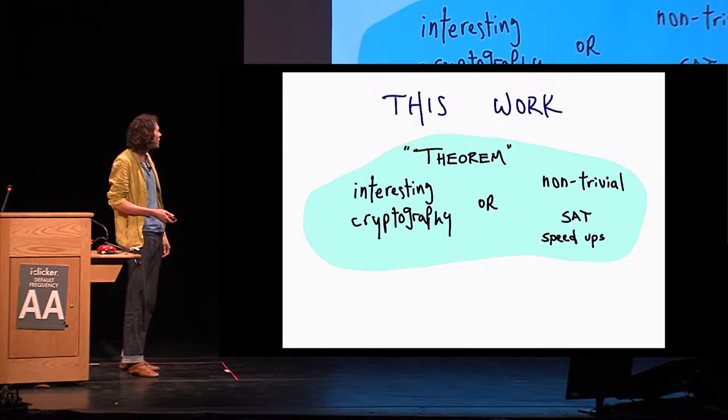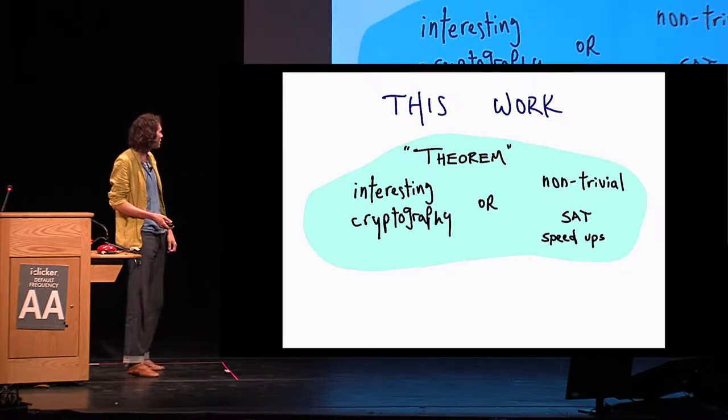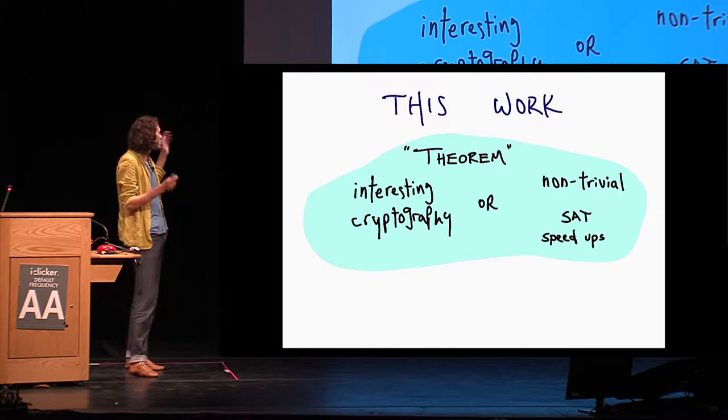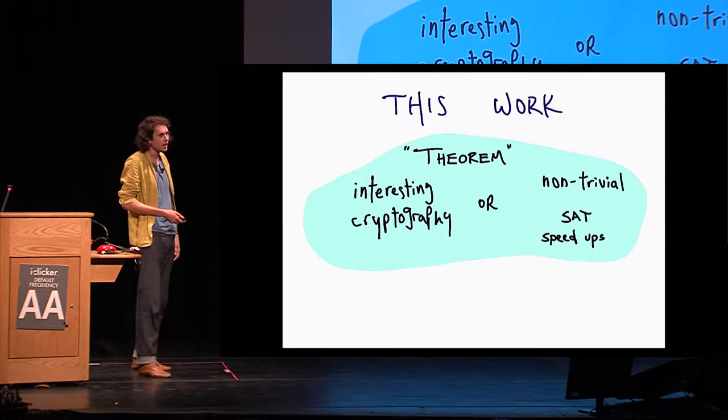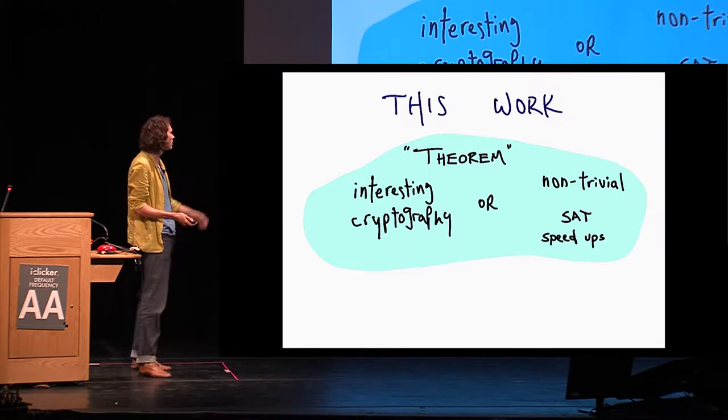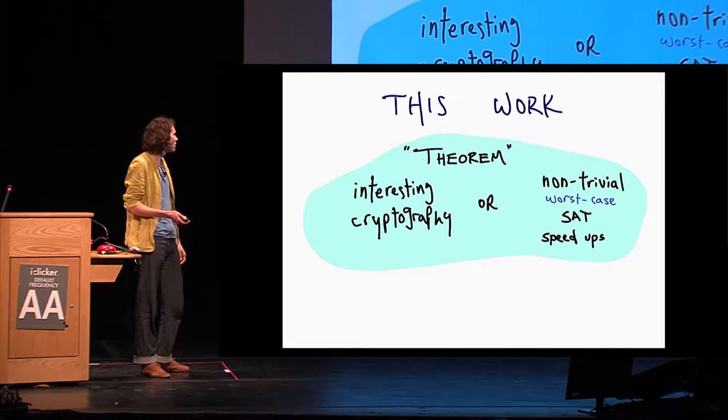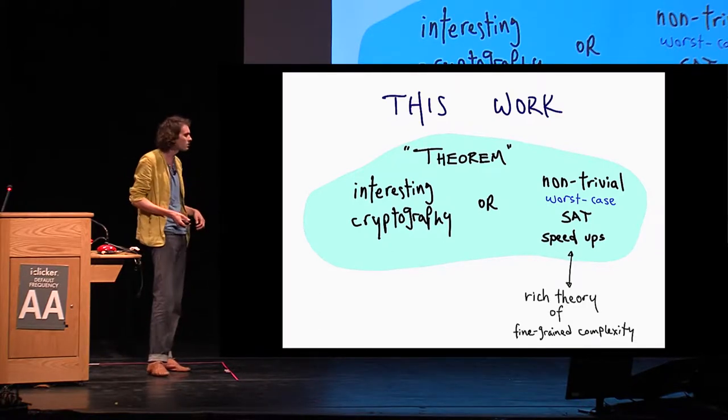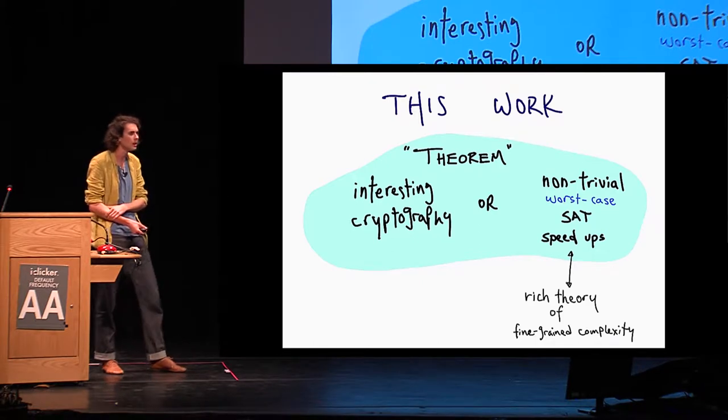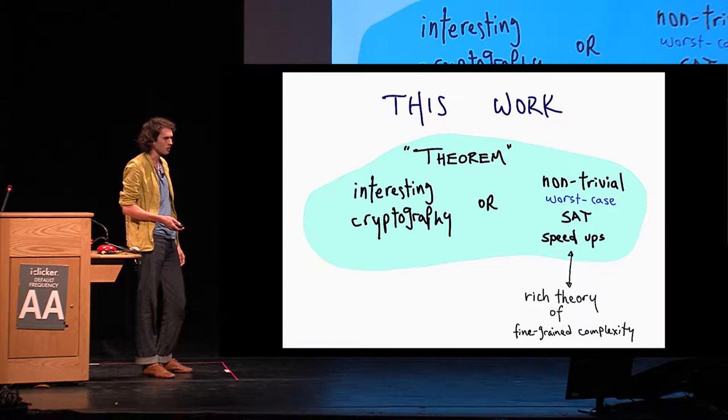So in this work, we consider the following win-win situation. We prove theorem statements of the form: we have interesting cryptography or non-trivial SAT speedups. Again, these SAT speedups are only interesting if they're on the worst case. And why do we think this is particularly interesting? Because it connects to this emerging theory of fine-grained complexity, which there's been an explosion in recent years.